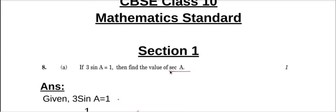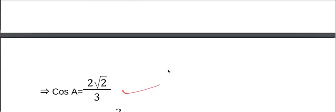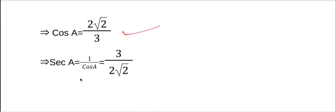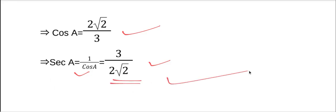The question is sec a, so we know that sec a equal to 1 by cos a. That is equal to 3 by 2 root 2. So the answer is sec a equal to 3 by 2 root 2, which is equal to 3 root 2 by 4 after rationalization.